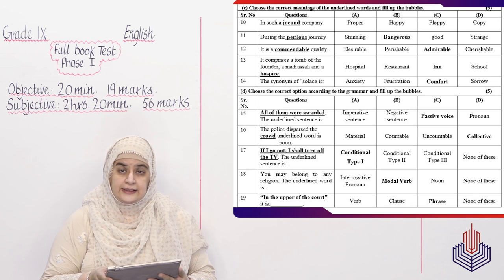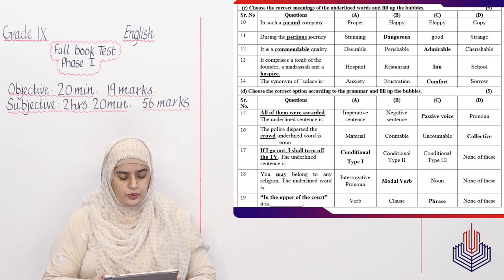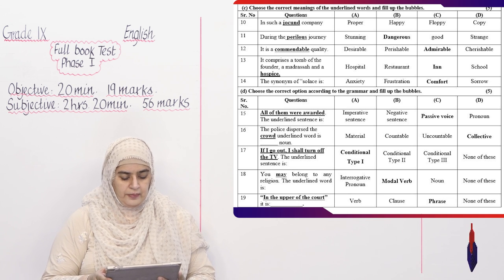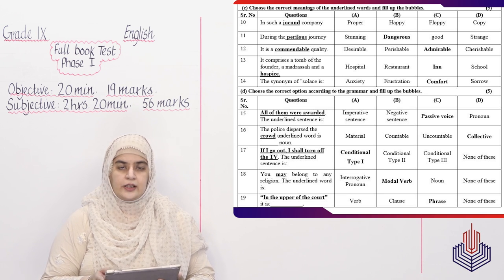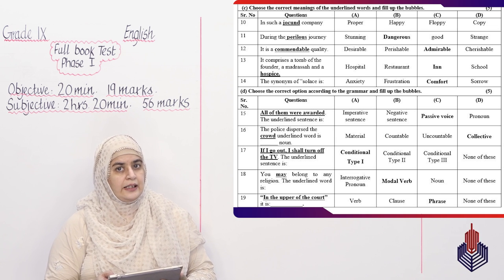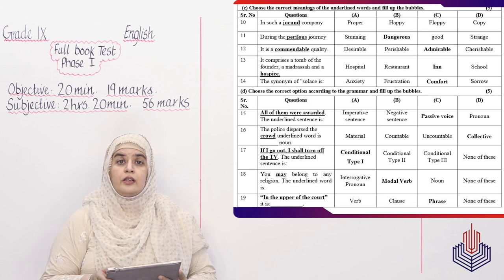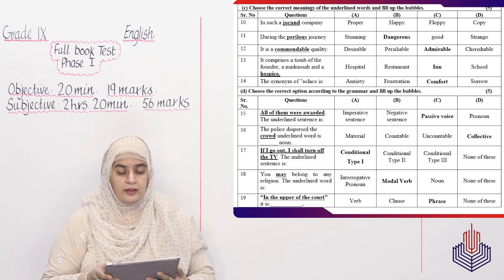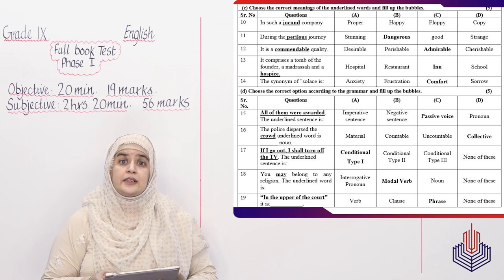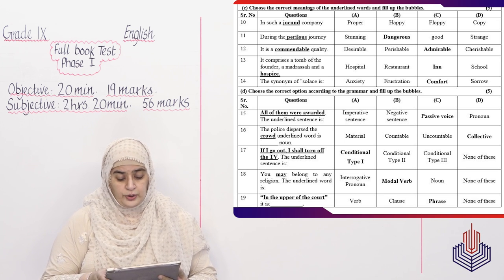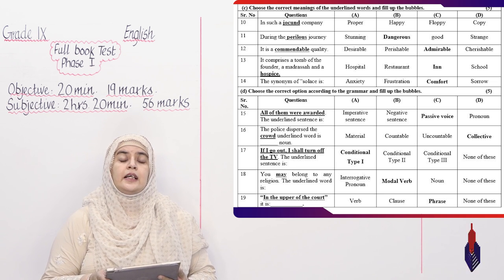Next is: it comprises a tomb of the founder, a madrasa and a hospice. And you have to tell what a hospice is. Hospital, restaurant, inn or school. Hospice is an inn. The synonym of solace. Synonym, S-same, so synonym means the same meaning. And the options are anxiety, frustration, comfort ya sorrow. This is comfort. Solace is comfort.